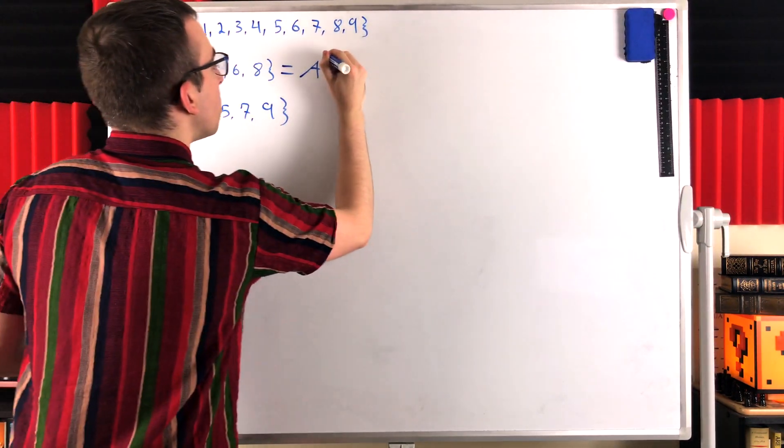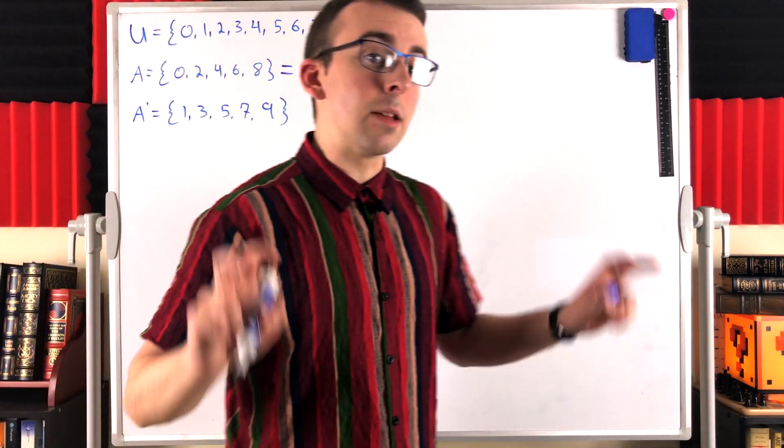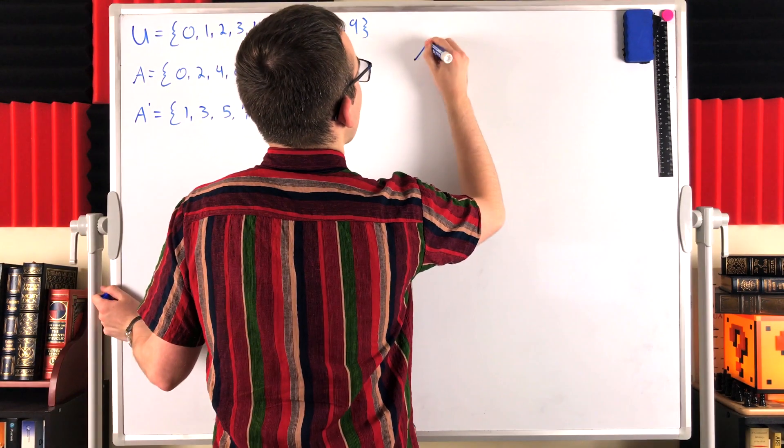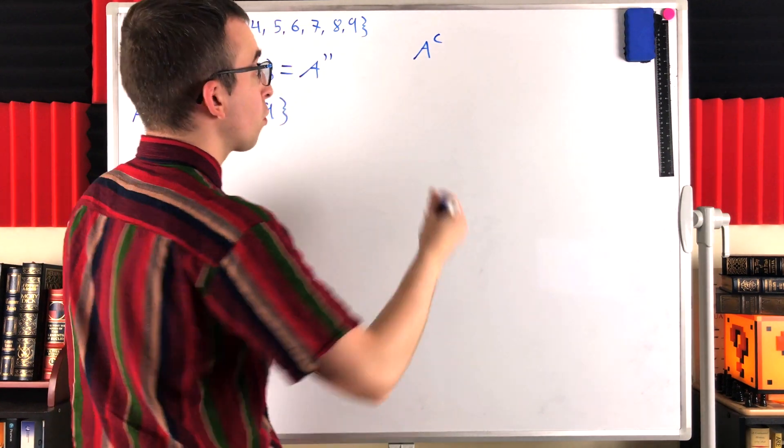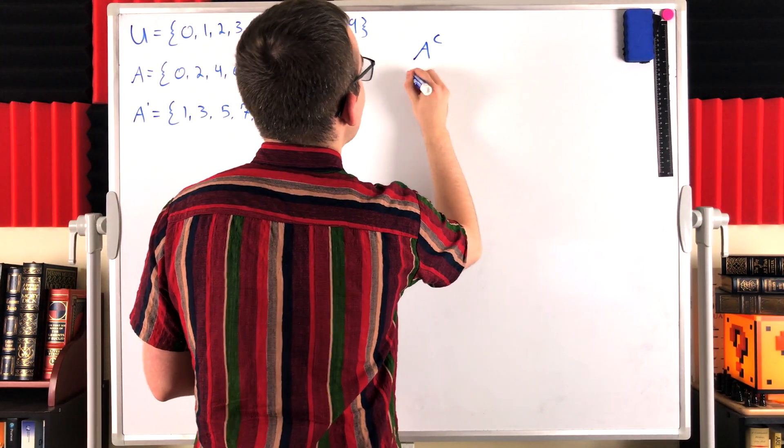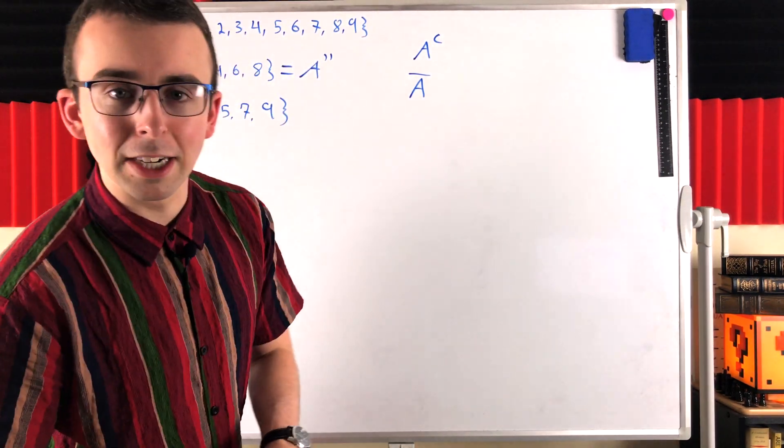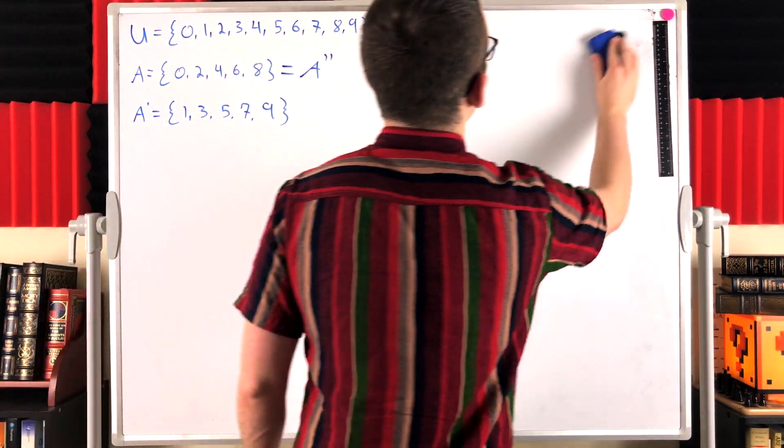So we have that A is equal to the complement of the complement of A. I'm using this handy prime notation for the complement sets, but some other common notations you might be familiar with are using a C in the superscript, or another one that I like a lot is a bar over the top. That's another common complement notation. We're using the lovely prime notation though for this lesson.